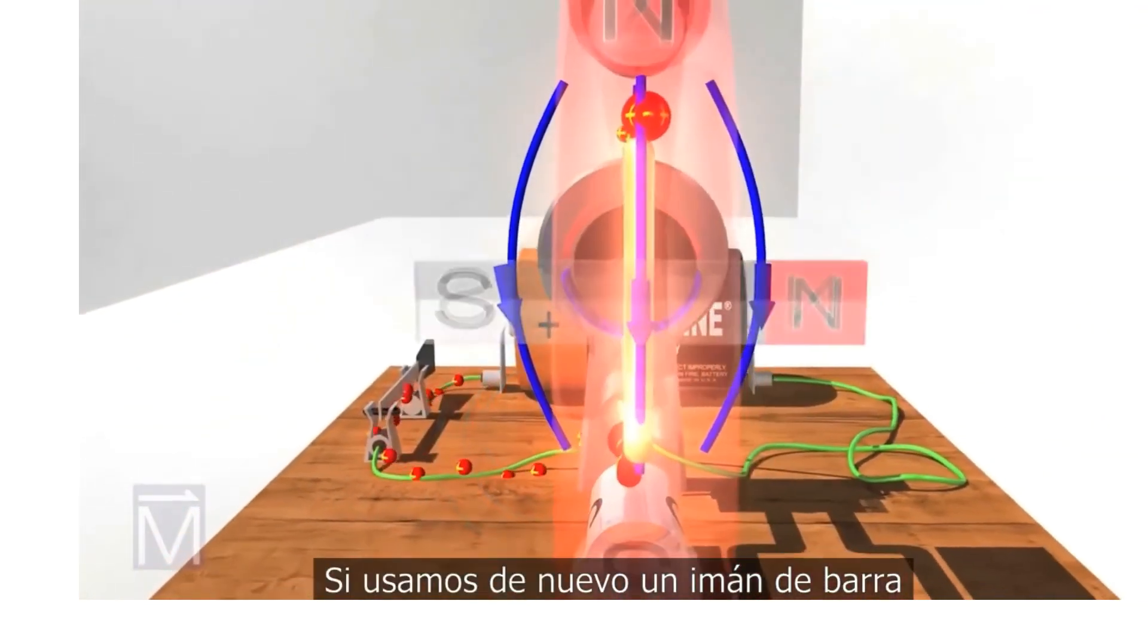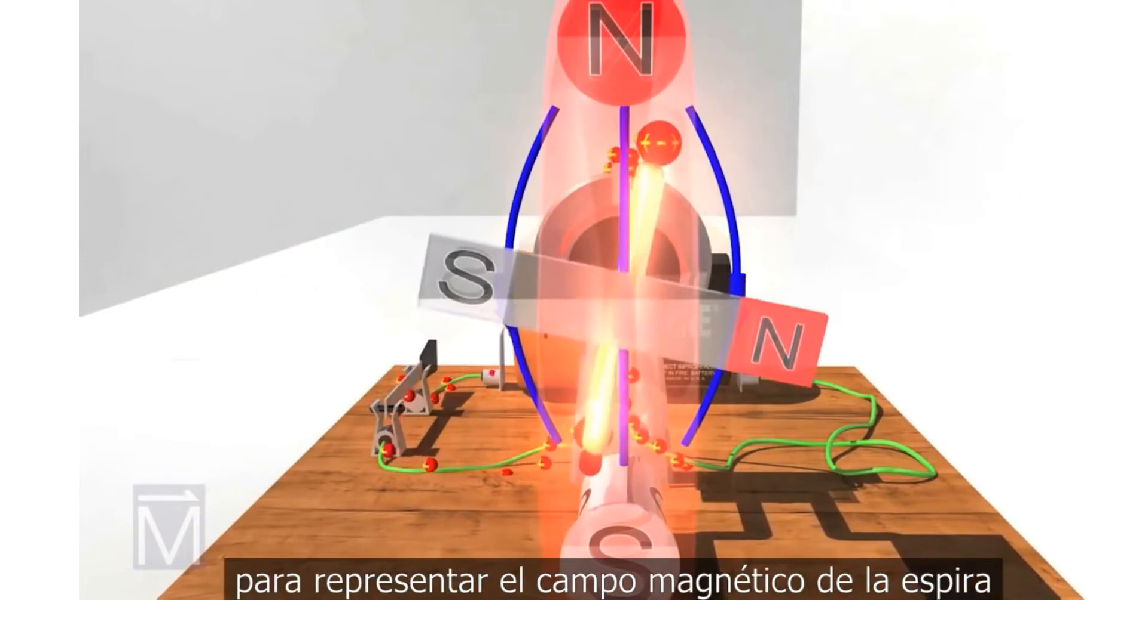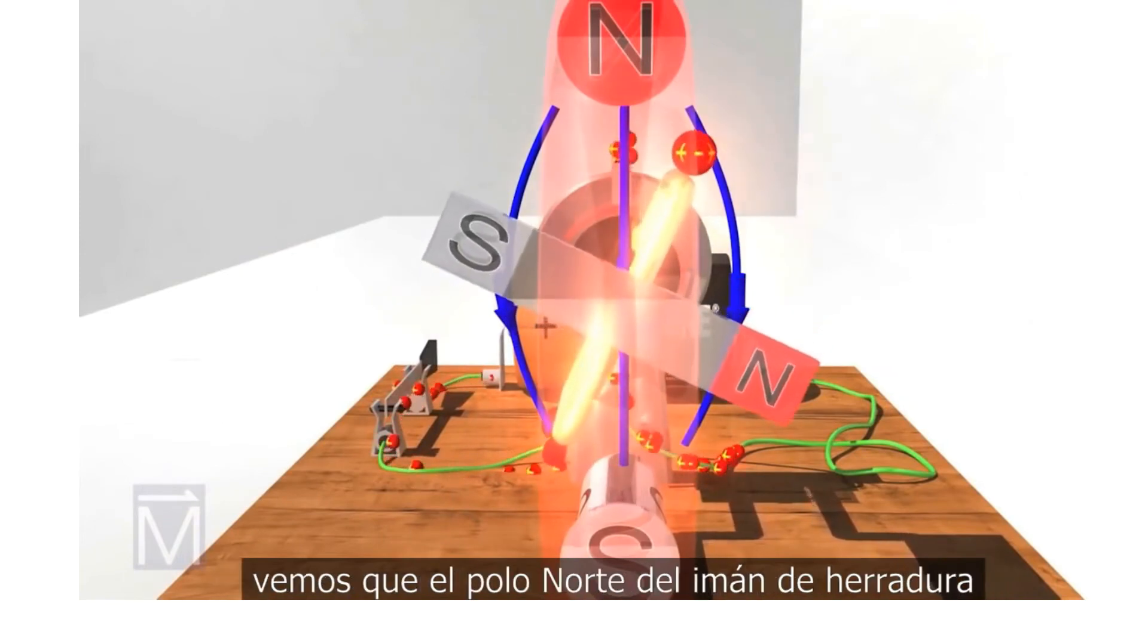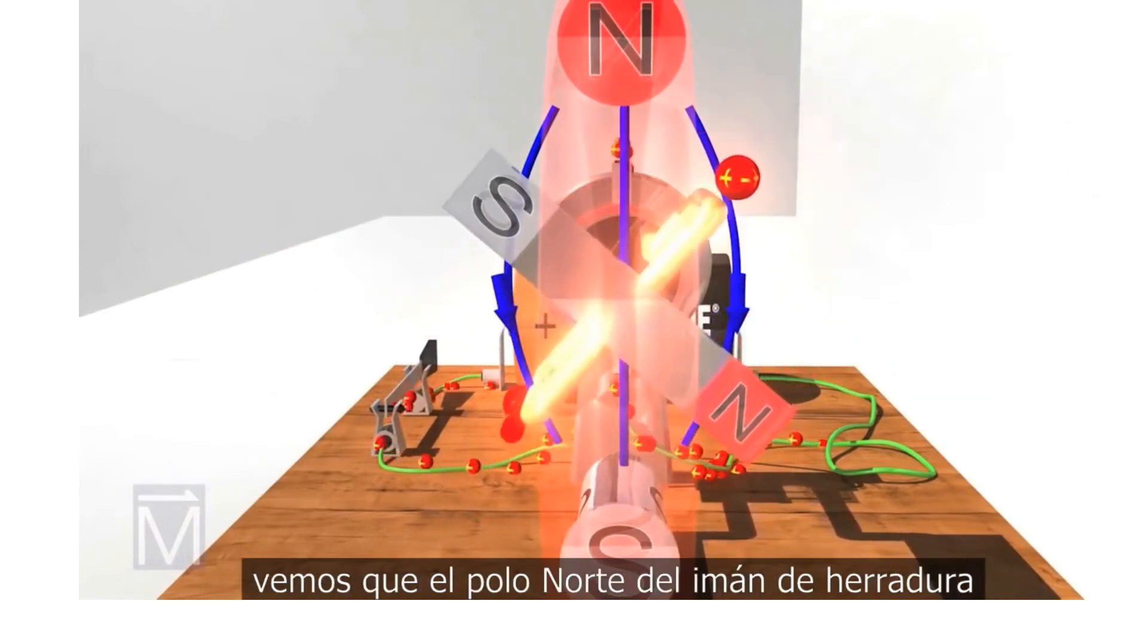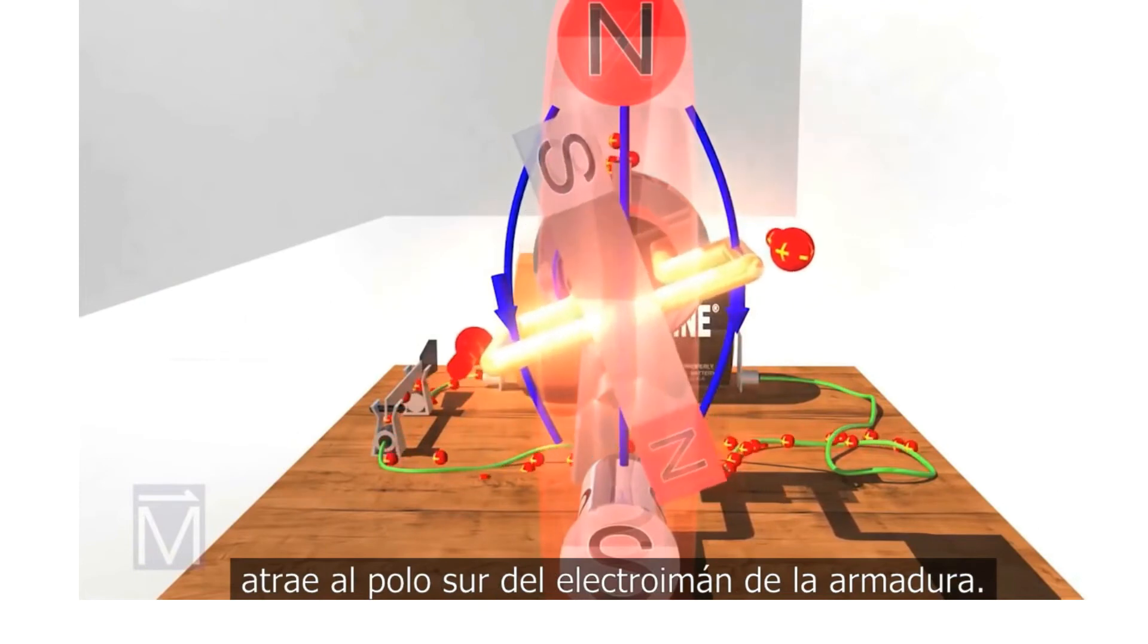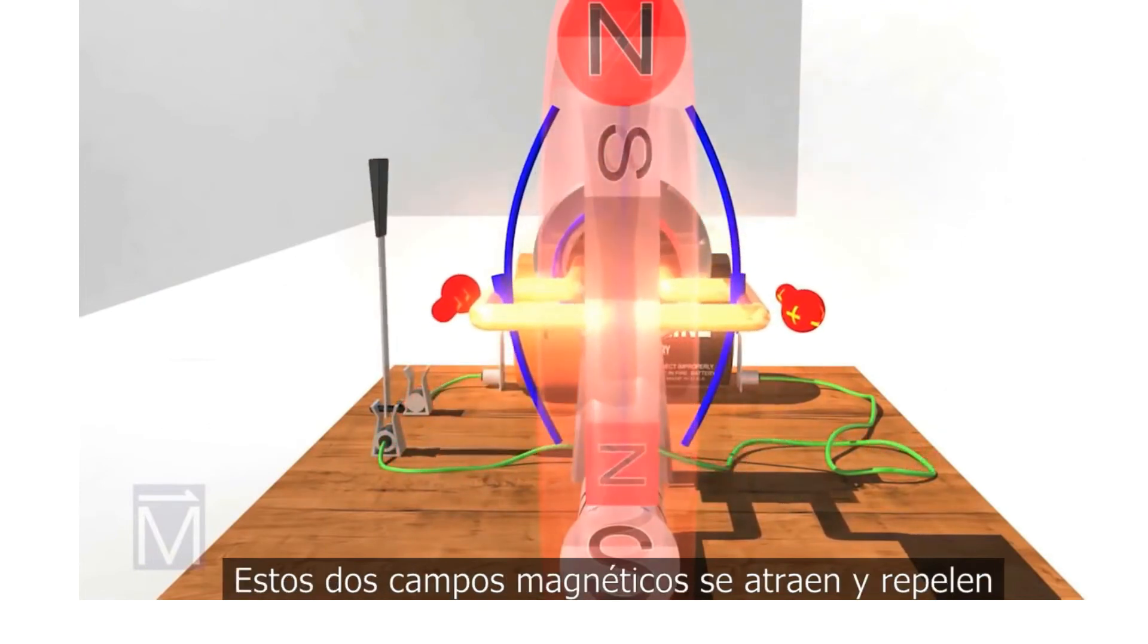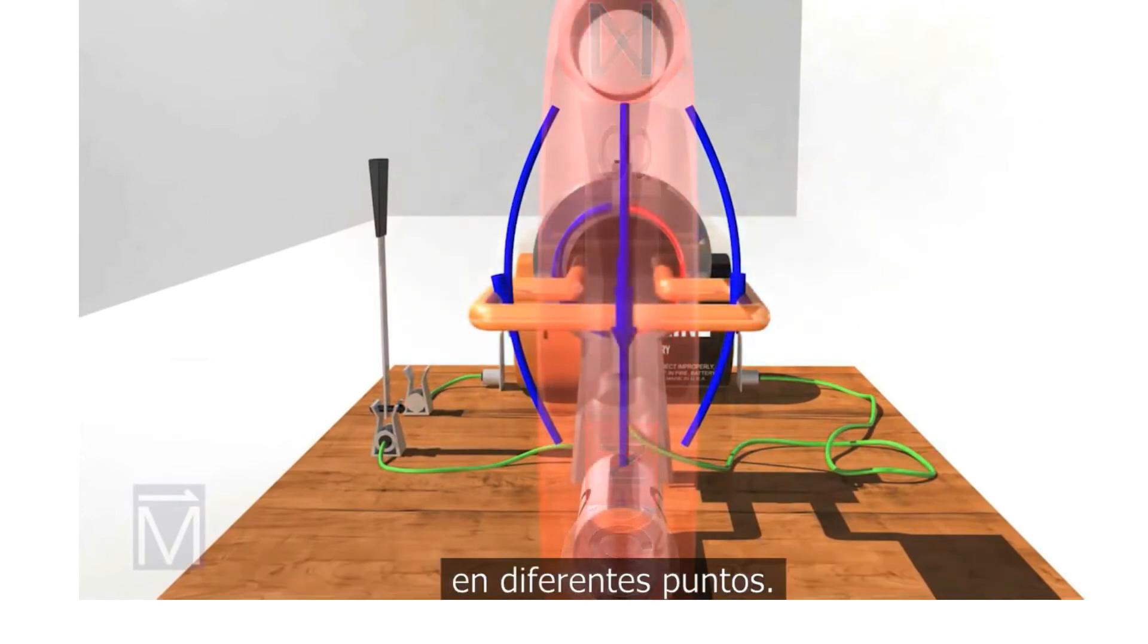Using this bar magnet again to represent the field of the coil, we see here that the horseshoe magnet's north pole is attracting the south pole of the electromagnet in the armature. In fact, these two magnetic fields oppose or attract each other at several points.